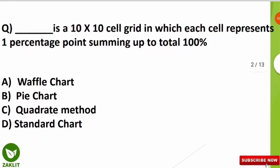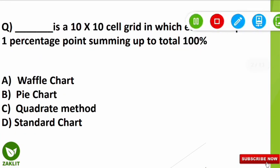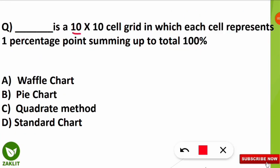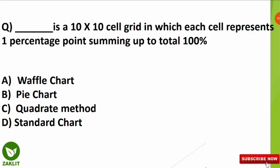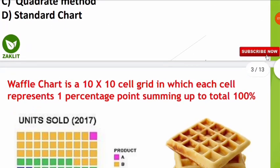The first MCQ question is on your screen: 'Dash is a 10 into 10 cell grid in which each cell represents one percentage point, summing up to a total of 100 percent.' Here are the options — I'll wait a few seconds then reveal the answer. The correct option is the waffle chart. For most of you, this term will be new, so let's move to the next slide to know more.